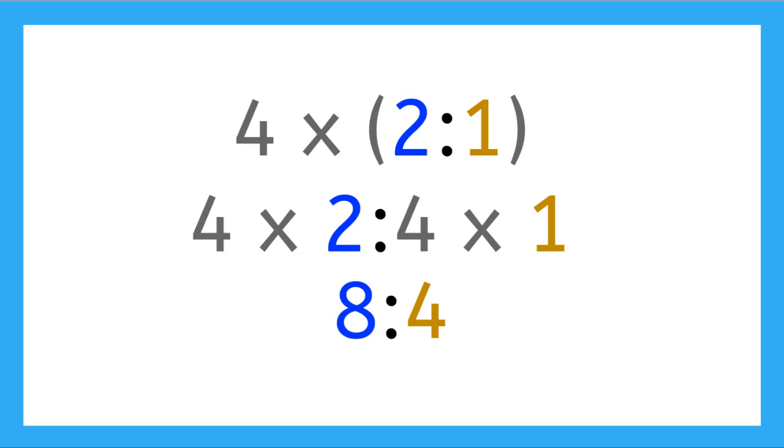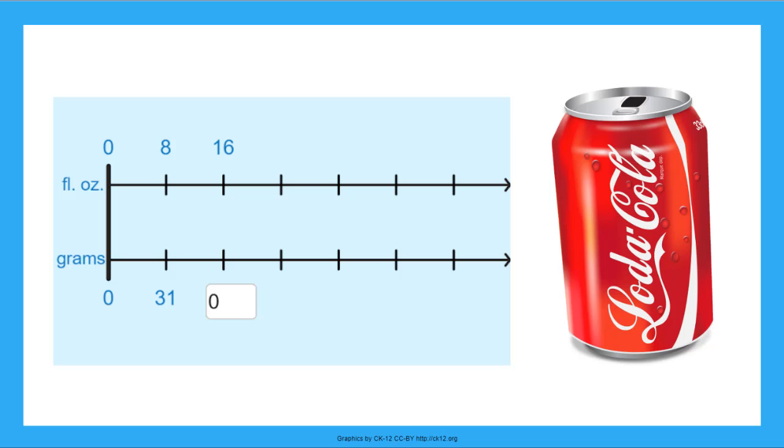But let's take our ideas of equivalent ratios to the double number line. The double number line is very similar to the double rulers we used in the last example, but there's no picture, just two horizontal lines.